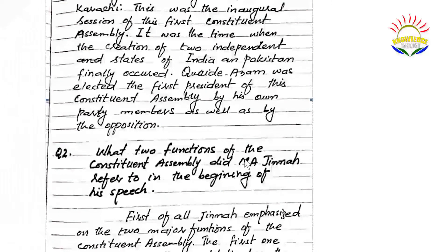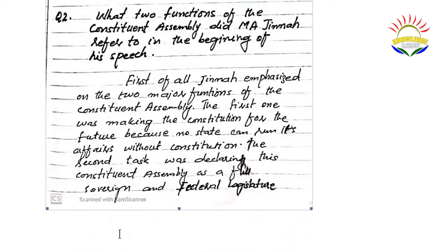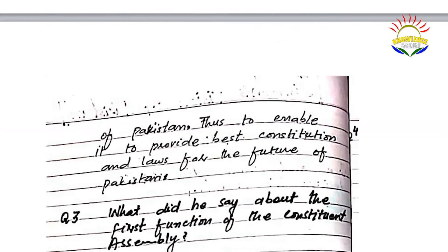Question number two: what two functions of the constituent assembly did M.A. Jinnah refer to in the beginning of his speech? Jinnah emphasized two major functions of the constituent assembly. The first one was making the constitution for the future, because no state can run its affairs without a constitution. The second task was declaring the constituent assembly as a full sovereign and federal legislature of Pakistan, thus enabling it to provide the best constitution and laws for the future of Pakistan.